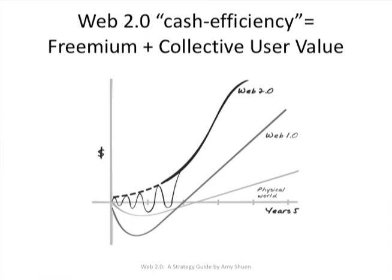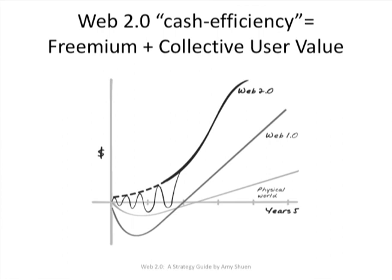We ended up with the difference with Web 2.0, which is much more cash efficient. Here you have the freemium strategy not being a loss leader, but being one that is driven by collective user value. So one of the key things about Web 2.0 that we will emphasize over and over again is the concept of how do you work with Web 2.0 to generate collective user value for your business.